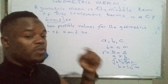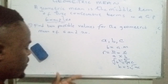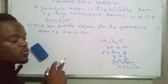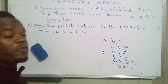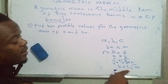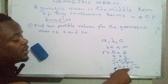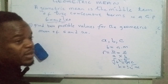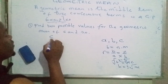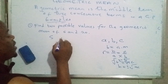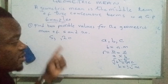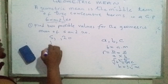With that still fresh in your minds, let's look at this example: find two possible values for the geometric mean of 5 and 20. You don't need to get confused when they say find two possible values — the answer will be a positive and a negative, meaning there are two values. So here we have 5 and 20, and we want to determine the geometric mean between them.